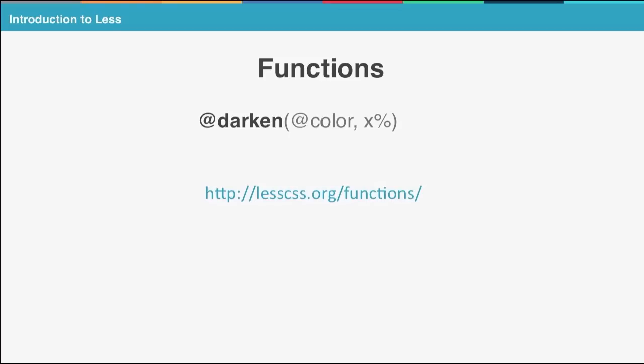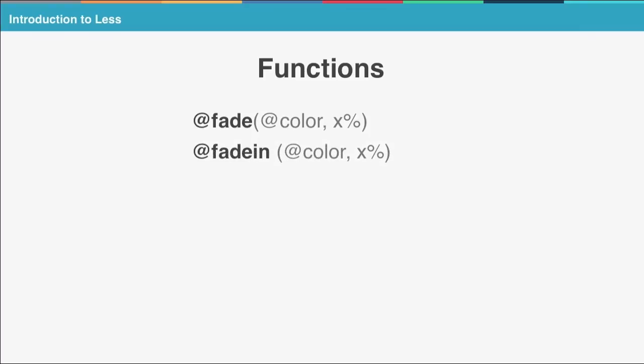For example, you have the function fade, which also takes two parameters. There is fade in, which decreases the transparency of a color, and fade out, which does the opposite.